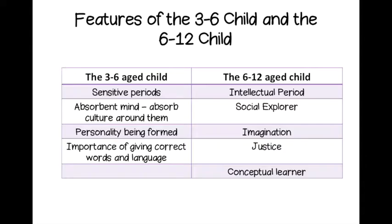The six-to-twelve age child is a different period — more one of intellectual exploration where the child is more able to understand abstract concepts, like the concept of kindness applied not just to themselves but to other people. Linked to that is the idea of justice: children who are six to twelve are really keen on making things fair. Imagination is also key — the child can see potential and imagines what could or might be.